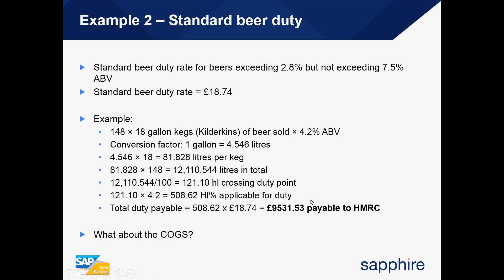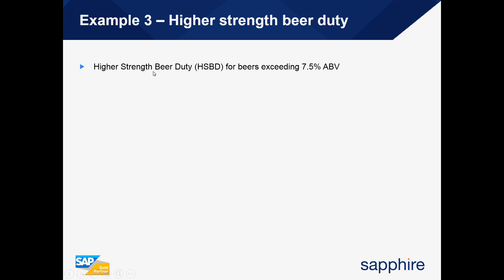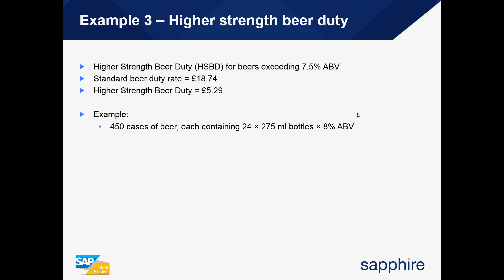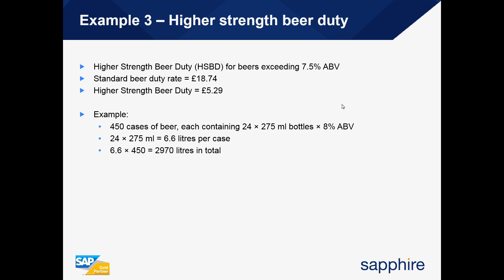The third example takes into account high strength beer duty, which is applied for beers exceeding 7.5% ABV. The value paid to HMRC combines the standard beer duty rate of £18.74 and the high strength beer duty of £5.29. We are selling 450 cases of beer each containing 24 bottles at 275 ml at 8% ABV. The 24 bottles multiplied by 275 ml gives 6.6 litres per case; 6.6 multiplied by 450 cases gives a total of 2,970 litres.